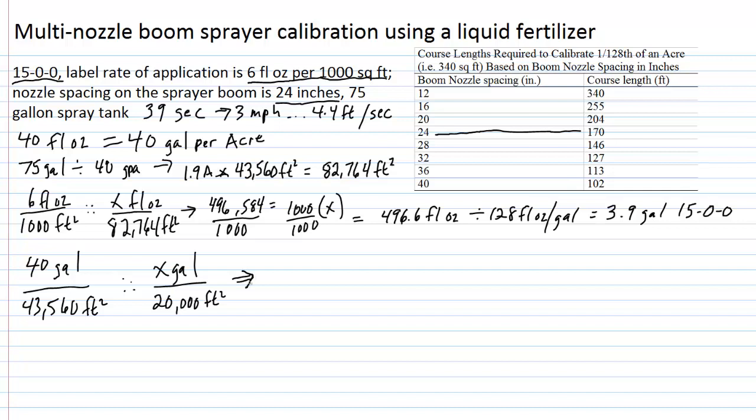Once again, cross-multiply, divide, and solve for X. Get 800,000 equals 43,560 times X. Divide both sides by 43,560 to solve for X.